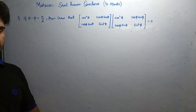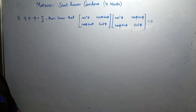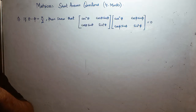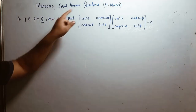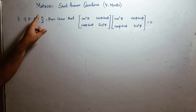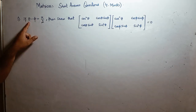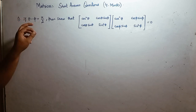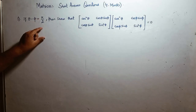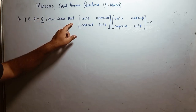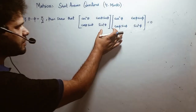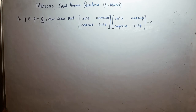As-salamu alaykum to everyone. This is Tehvir Yusuf here. Welcome to my YouTube channel, and alhamdulillah I hope you all are fine. In this video we will solve a few questions from matrices. I have written here the short answer questions carrying four marks. The first question is: if theta minus phi equals to pi by 2.